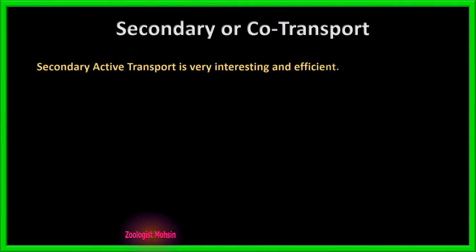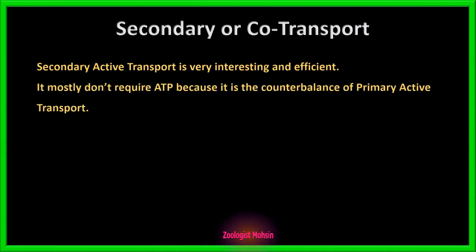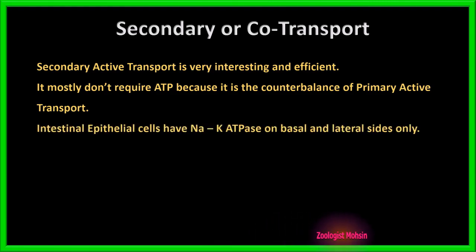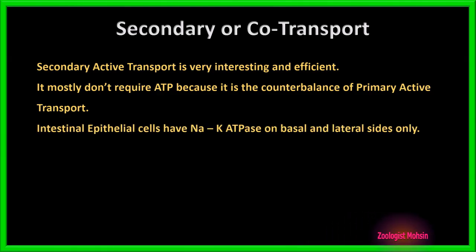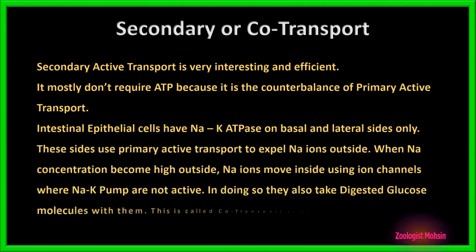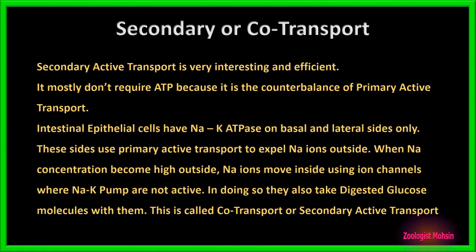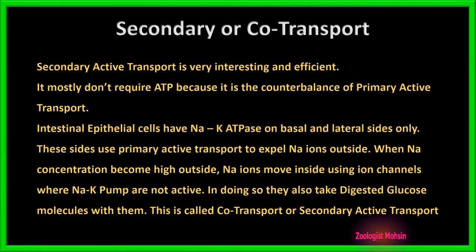Now let's talk briefly about secondary or co-transport. Secondary active transport is very interesting and efficient — it mostly does not require ATP because it is the counterbalance of primary active transport. Intestinal epithelial cells have sodium-potassium ATPase on basal and lateral sites only. These sites use primary active transport to expel sodium ions outside. When sodium concentration becomes high outside, sodium ions move inside through ion channels where sodium-potassium pumps are not active. In doing so, they also take digested glucose molecules with them. This is called co-transport, or secondary active transport.